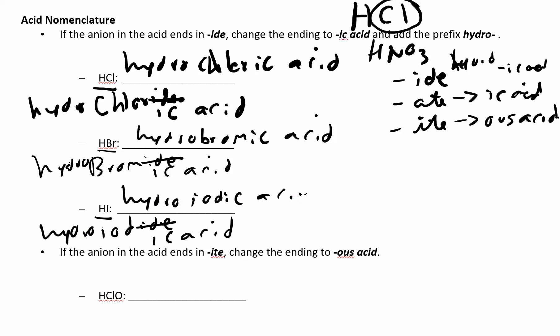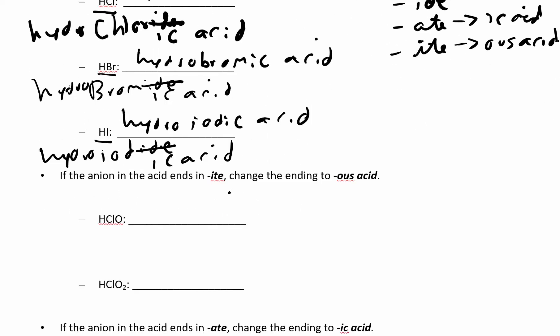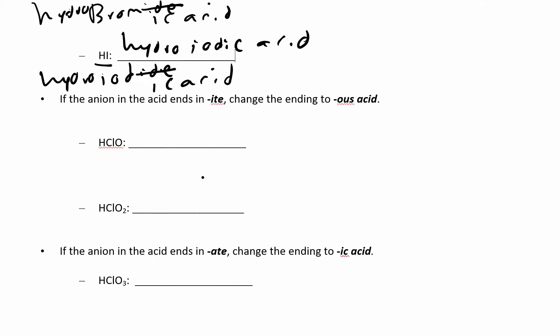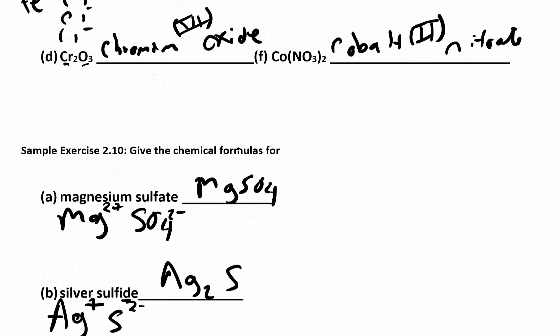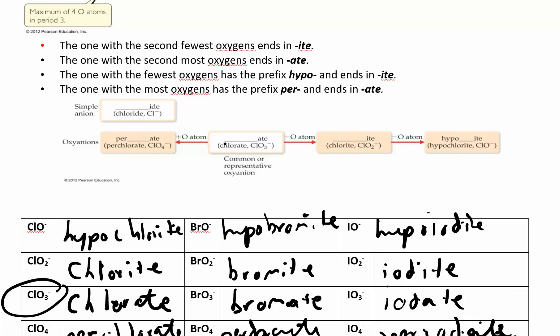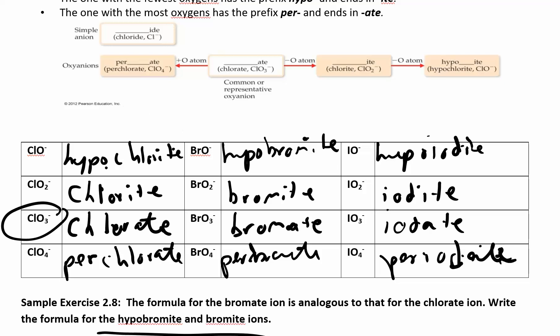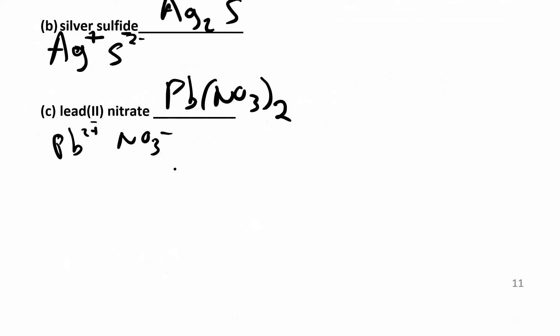Now these are your binary acids - hydrogen plus something else, just one other thing. Now here we have some oxyacids where you have a different amount of oxygen. Again, same process - you need to figure out you have hydrogen and then something else. ClO⁻, if you go back to where we were doing our polyatomic ions, ClO⁻ is the hypochlorite ion.